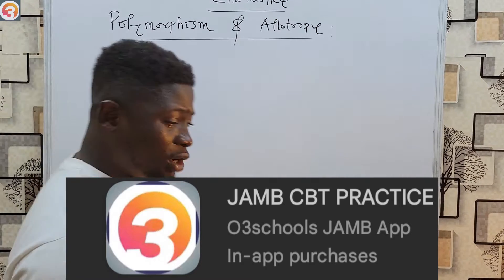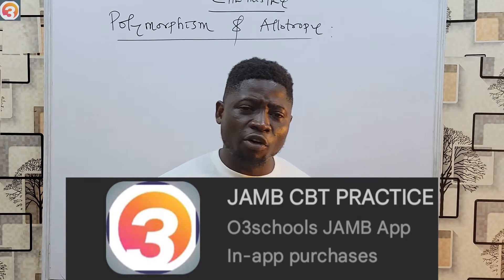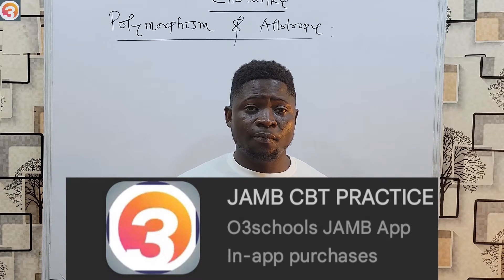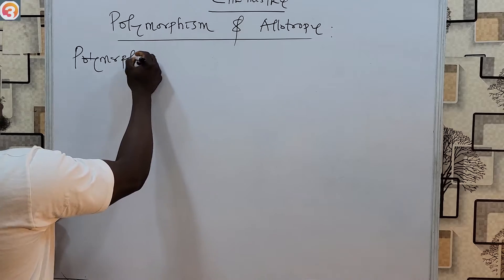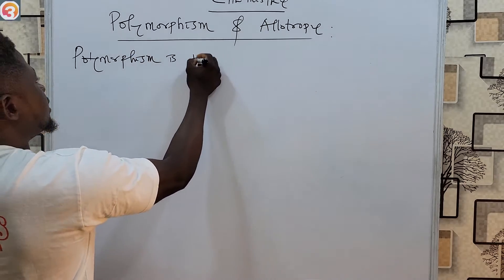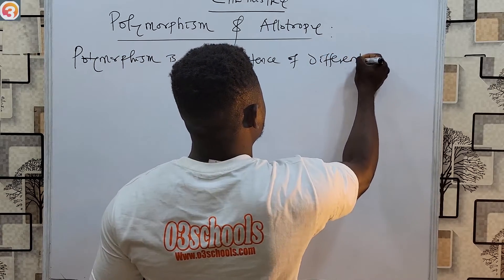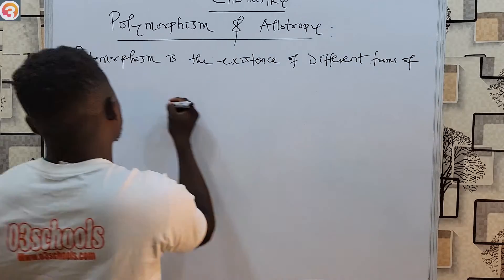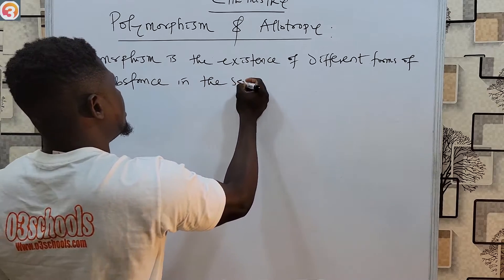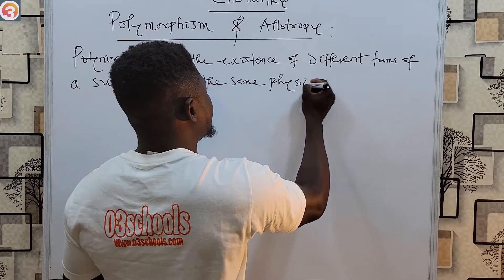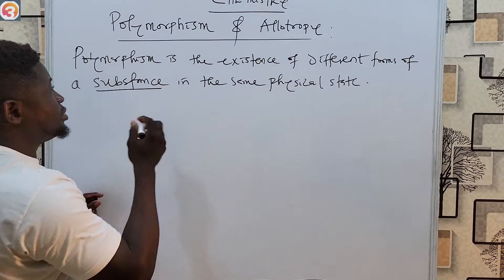Now, polymorphism is the existence of different forms of a substance — the keyword here is 'substance' — in the same physical state.